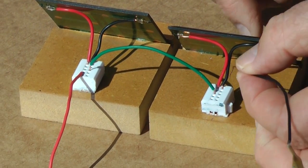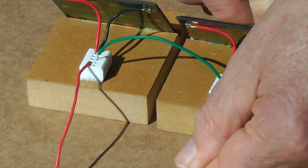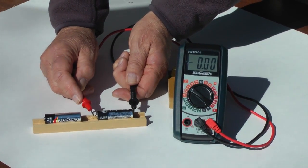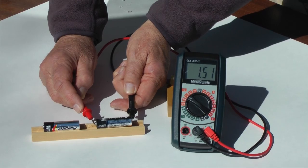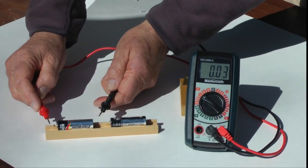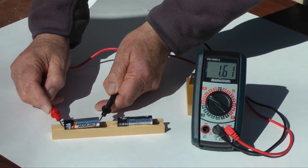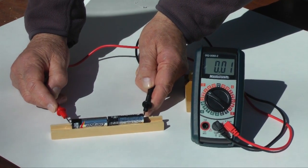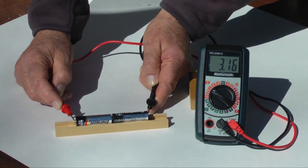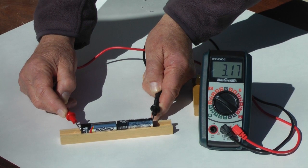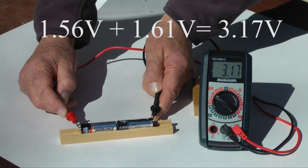Joining panels in series increases voltage. I'll use these two AA battery cells to demonstrate how this works. I measure 1.56 volts at this first battery. And the second one measures 1.61 volts. Pushing the two batteries together so that the positive terminal of one battery touches the negative terminal of the other produces 3.17 volts, the sum of the two voltages. 1.56 plus 1.61 yields 3.17.